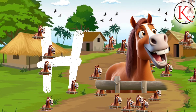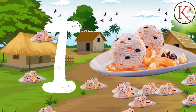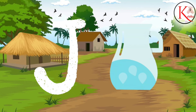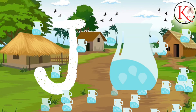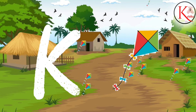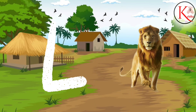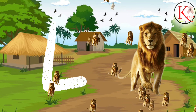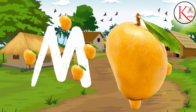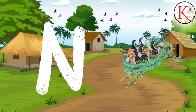H for Horse. I for Ice Cream. J for Jug. K for Kite. L for Lion. M for Mango. N for Nest.